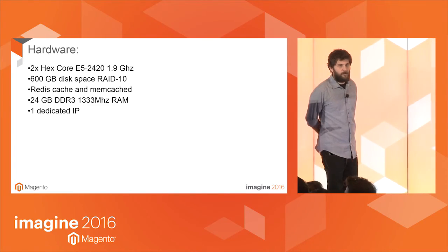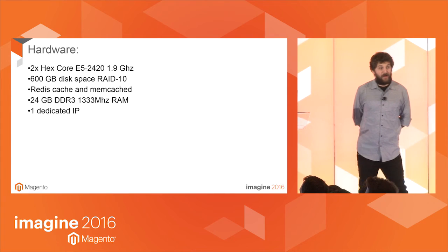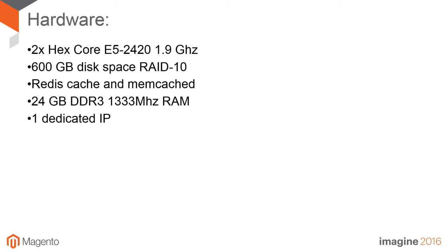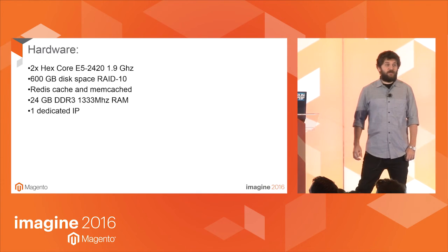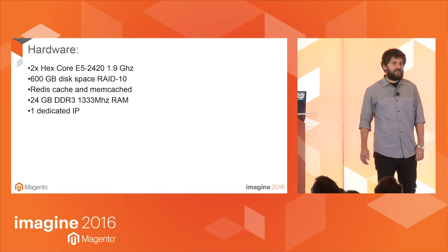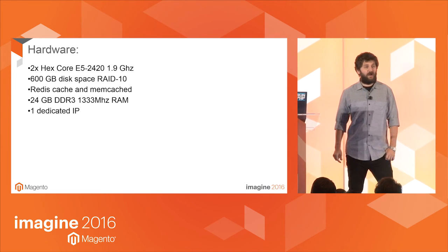Now to start I will show you the hardware we use. This is a server anyone can go get right now — this is not a super server we set up just for these tests. This is bare metal, but underneath the hood we did several customizations to improve the software we use to serve content. To increase the read and write performance, we mounted frequently accessed file systems with the noatime attribute, and that includes home, var, and temp.